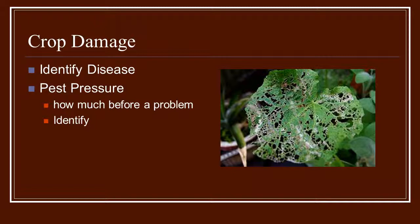When you do start seeing some crop damage, the first thing you need to do is identify what it is. Is it from a pest causing the problem? Is it from a particular bacteria or a virus? Many fact sheets and pictures on the internet can help you understand what you're dealing with. Because if you're treating for a bacterial disease when actually it is vine borers going in and killing your pumpkins, then you are way behind in trying to treat.